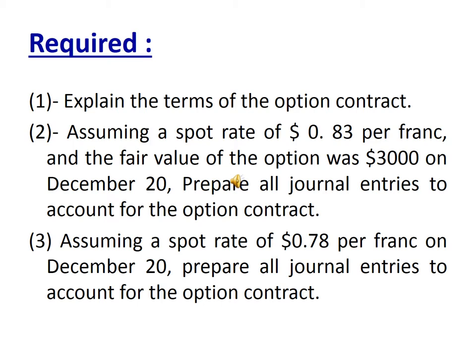Required: Number 1 — explain the terms of the option contract. Number 2 — assuming a spot rate of $0.83 per franc and a fair value of the option of $3,000 on December 20, prepare all journal entries to account for the option contract. Another assumption is a spot rate of $0.78 per franc on December 20 — prepare all journal entries to account for the option contract under this third assumption.